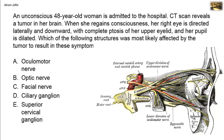Let's read the stem again. When she regains consciousness, her right eye is directed laterally — meaning the lateral rectus muscle is functioning, and since the lateral rectus is supplied by the abducent nerve, the abducent nerve is not affected. The eye is also directed downward. Downward movement is produced either by the superior oblique or by the inferior rectus muscle. The superior oblique is supplied by the trochlear nerve, and the inferior rectus by the oculomotor nerve, so there is still a possibility that either one is affected.